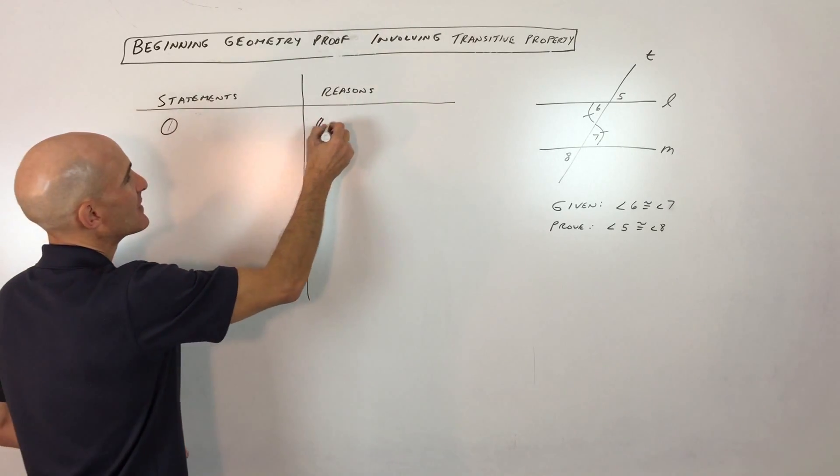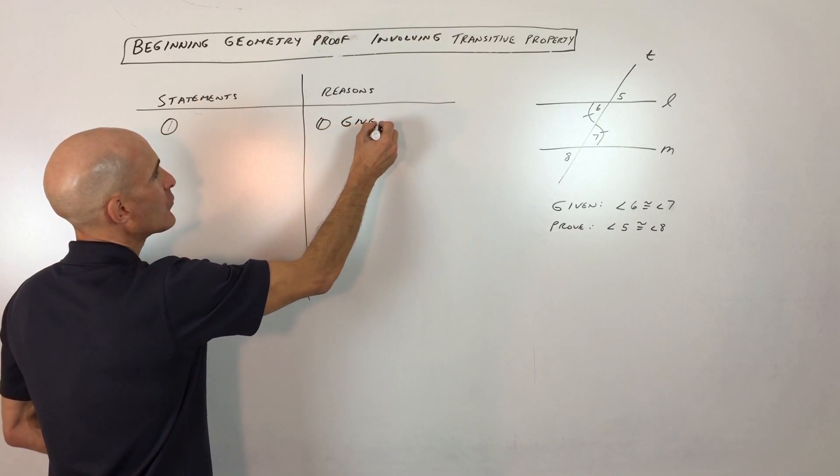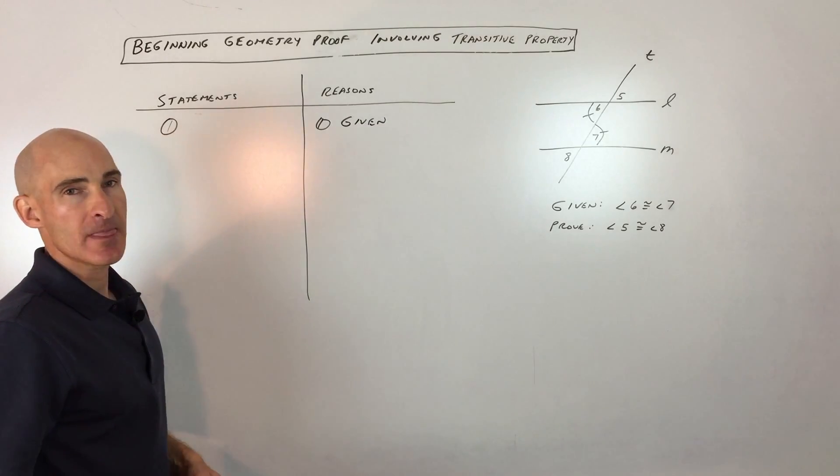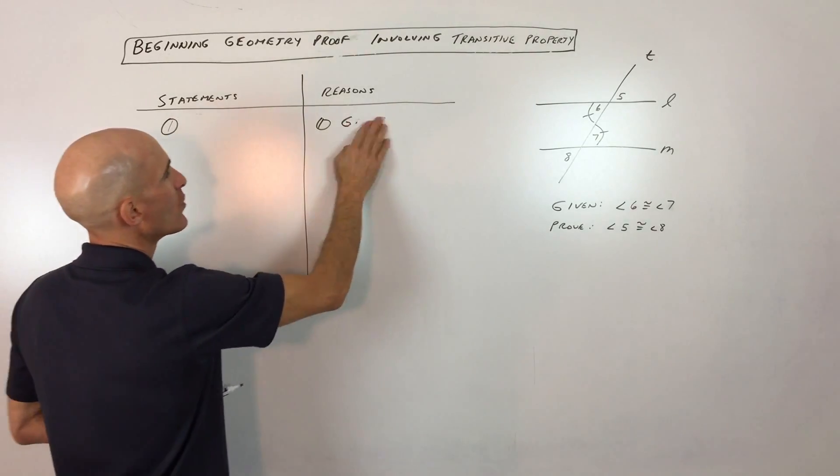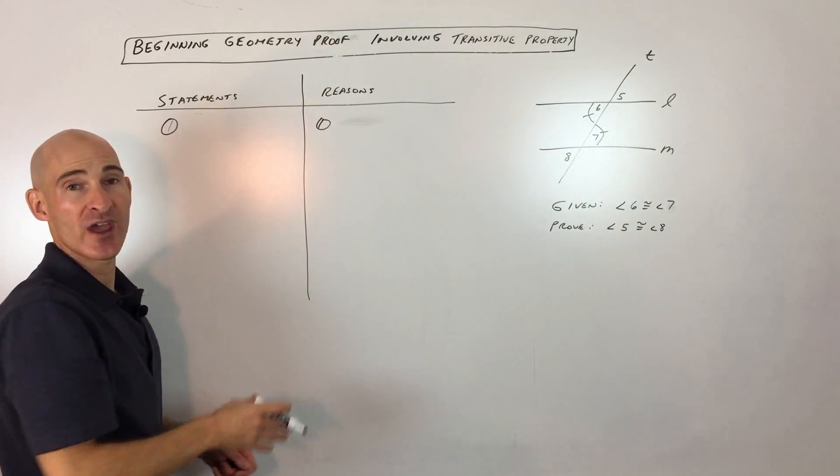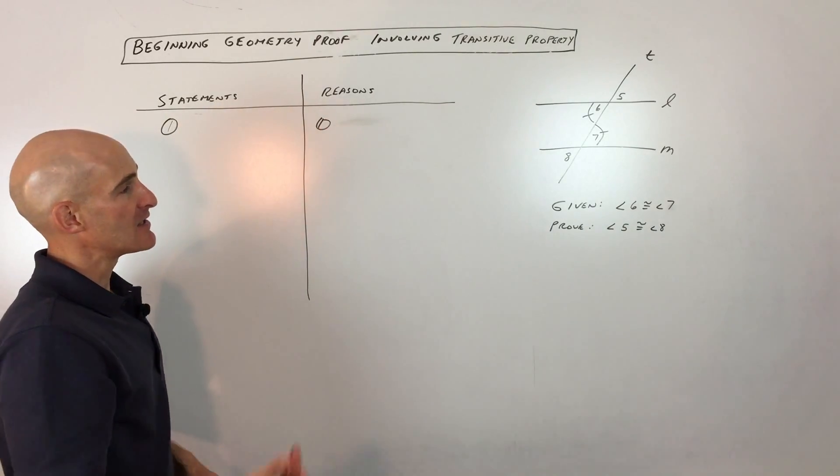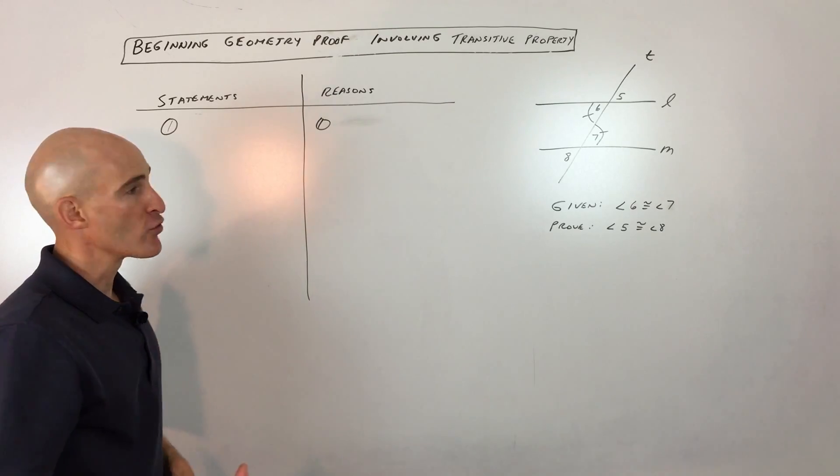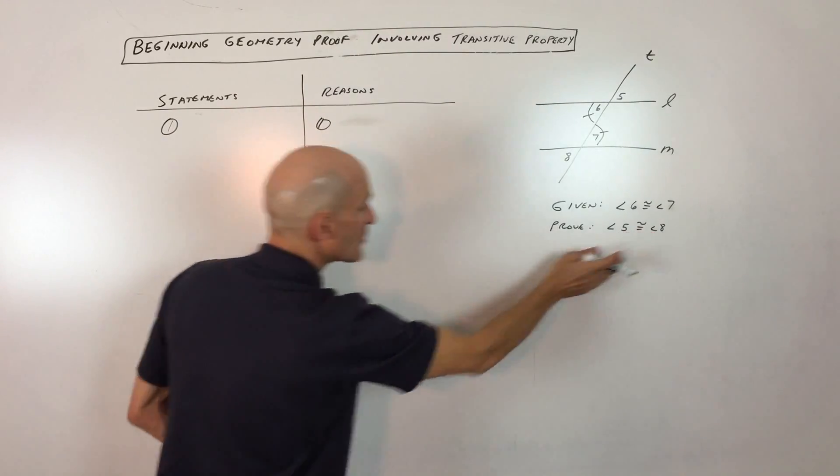Basically, step number one, I always like to write the givens first. Not everyone writes the givens first. As a matter of fact, maybe in this proof we won't do it first. A lot of times I just like to do it and write it and get it out of the way so I don't forget about it, and it just gets me going with the proof. And then whenever you're trying to prove, you always want to make that the last step.